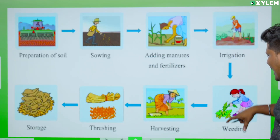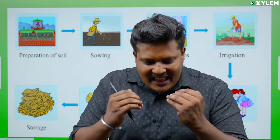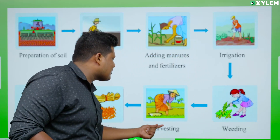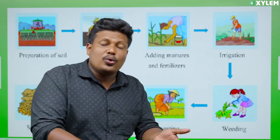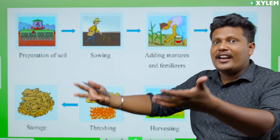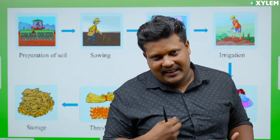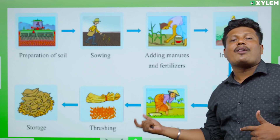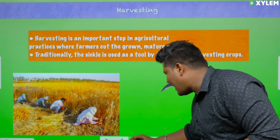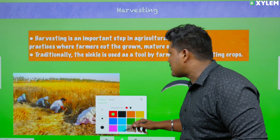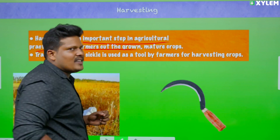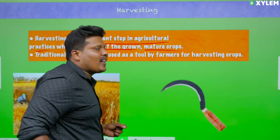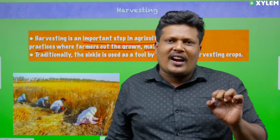So, we are going to talk about the harvesting and threshing. In this video, we are going to talk about harvesting and threshing. Harvesting is an important step in agricultural practice where farmers cut down fully grown and mature crop — that is the process of harvesting.